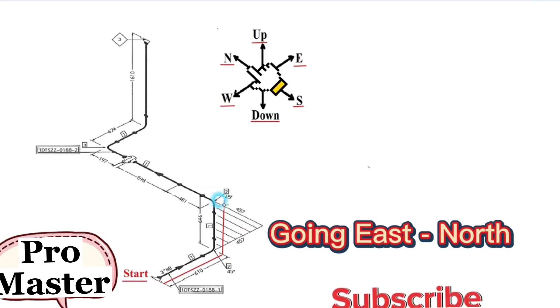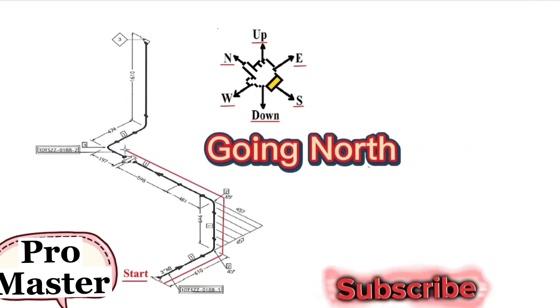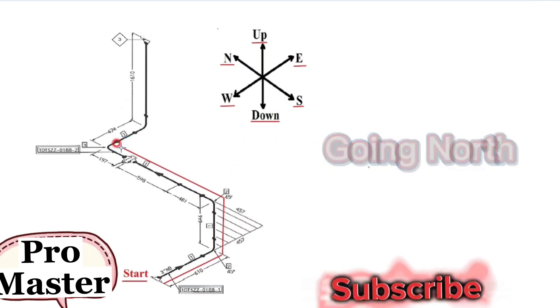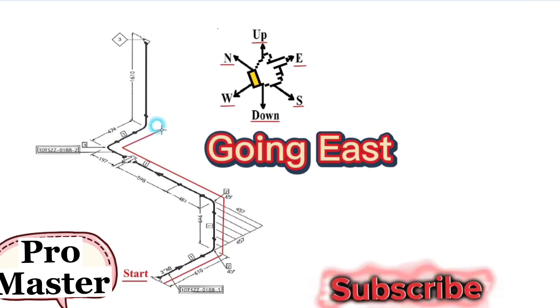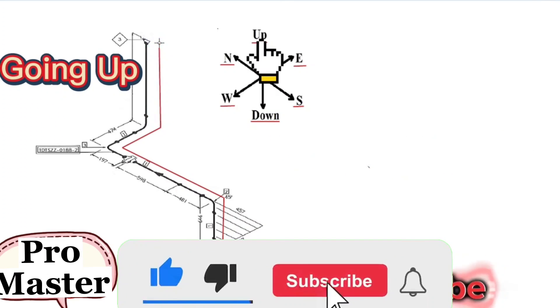Then the pipe travel continues to the north direction. In this point, the pipe travels to the east direction. Then the pipe travels continue to the up direction and the correct reading of the pipe drawing is completed.